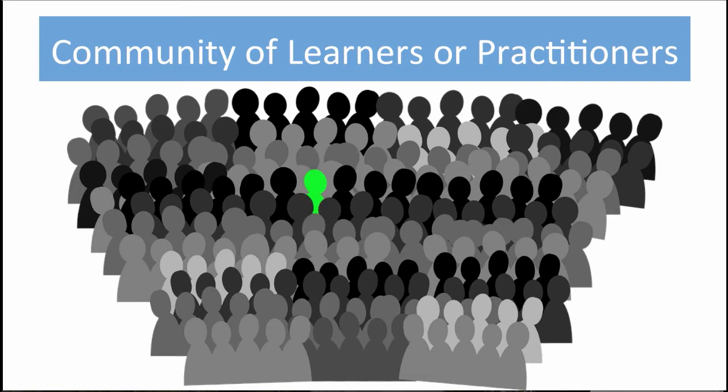In order for learning to be facilitated within a community of learners or practitioners, such as the community that is established in this course, a balance must be established between comfort, security, and criticism. This applies to all members of the community, including the instructor as well as learners. The academic community relies on the process of peer review to ensure that a certain standard of rigor and quality is maintained.